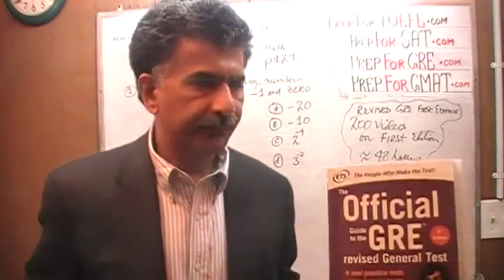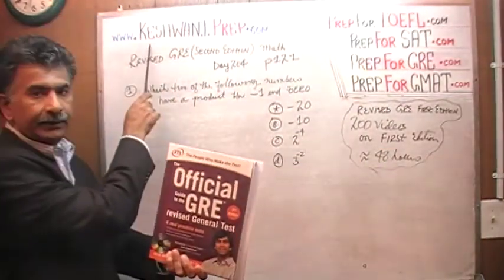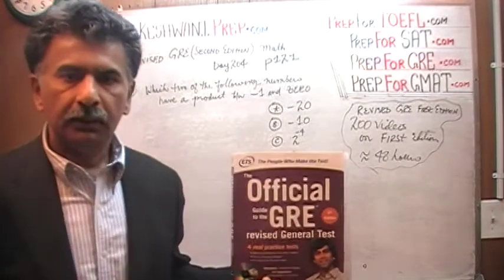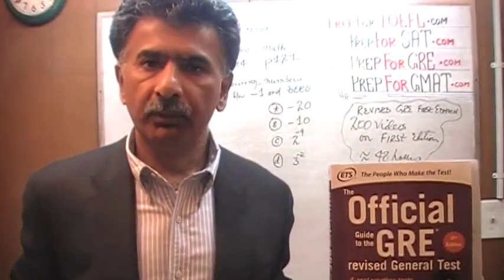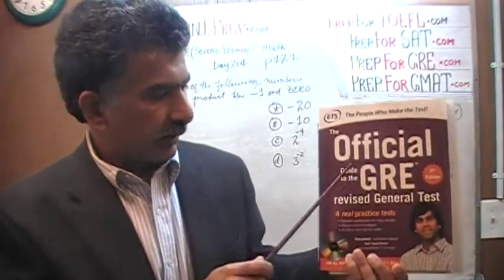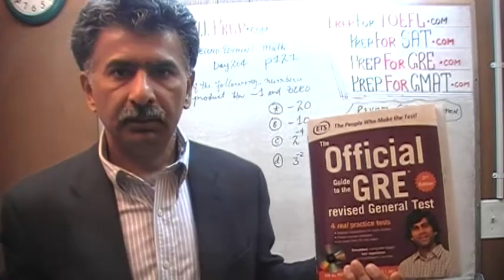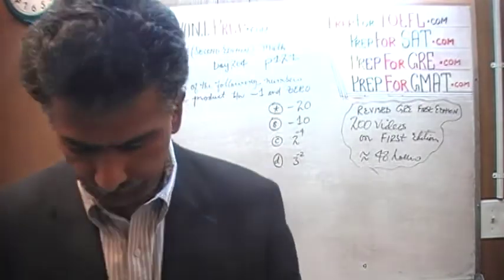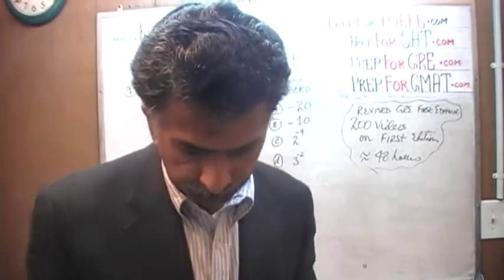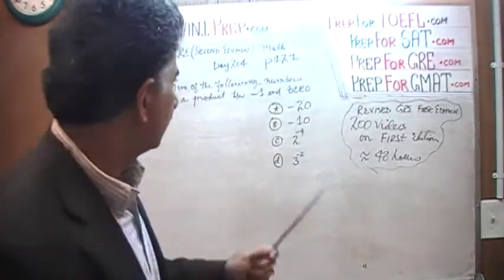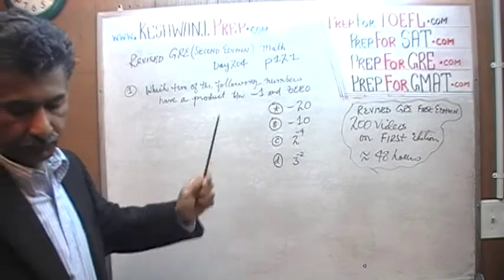Hello, my name is Keshwani, K-E-S-H-W-A-N-I. We are here because we want to prepare for the GRE. We have been solving GRE math problems out of this book, the Official Guide to the Revised GRE, second edition. If you do not own this book already, purchase one immediately — make sure it is the second edition. The problem we are about to solve is on page 121. Today is lesson number 204, the very first problem on page 121.